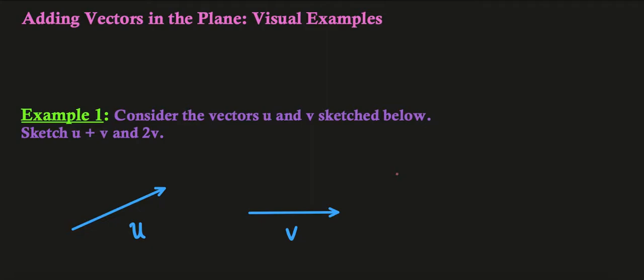So the idea is if we have a vector let's say u and we have another vector v, then u plus v is going to be given by taking first the vector u, then to the tip of u we'll start v, and then u plus v will be this vector here.